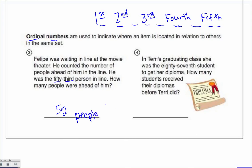All right, you pause the video and try number four. Turn it back on when you're ready for the solution. In Terry's graduating class, she was 87th student to get her diploma. How many students receive their diplomas before Terry did?